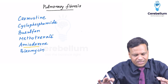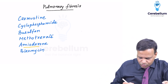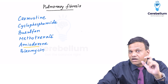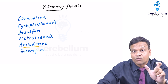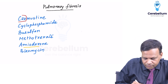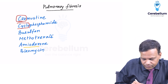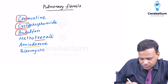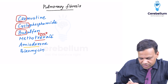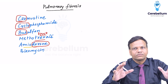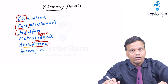How to remember? Very easy. You can see that in the name of all these drugs, there is some vehicle — some mode of transport. Like, you can see here is car (carmustine), here is cycle (cyclophosphamide), here is bus (busulfan), and methotrexate has truck, and amiodarone has drone. So all are modes of transport, and all of them will blow the horn.